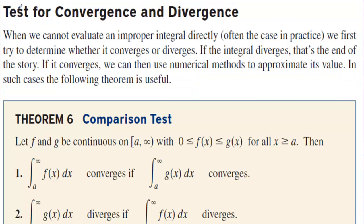Test for convergence and divergence. When we cannot evaluate an improper integral directly — often the case in practice — we first try to determine whether it converges or diverges. If the integral diverges, that's the end of the story. If it converges, we can use numerical methods to approximate its value. In such cases, the following theorem is useful.